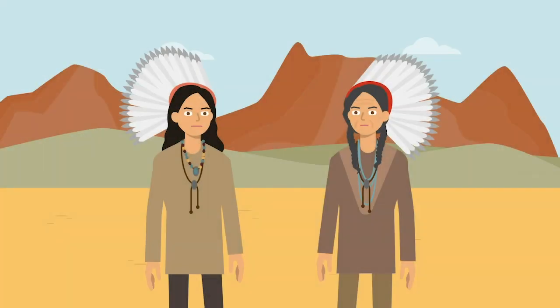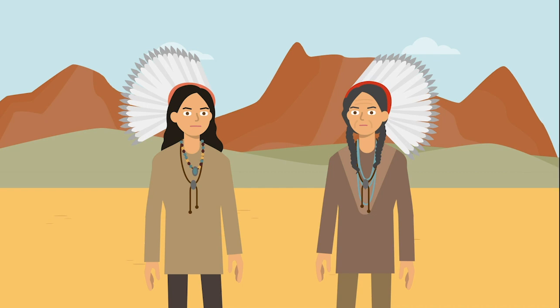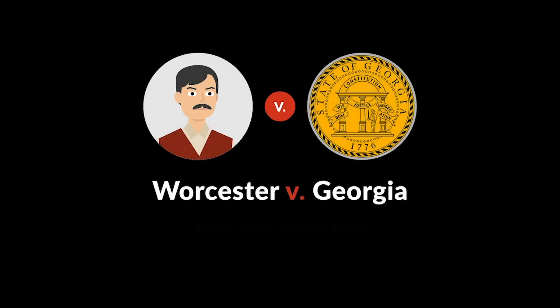What legal status do Indian tribes have in the United States? Are they equivalent to states, or foreign nations, or something else entirely? Worcester v. Georgia was the third of three United States Supreme Court cases from the early 19th century that sought to resolve this issue.